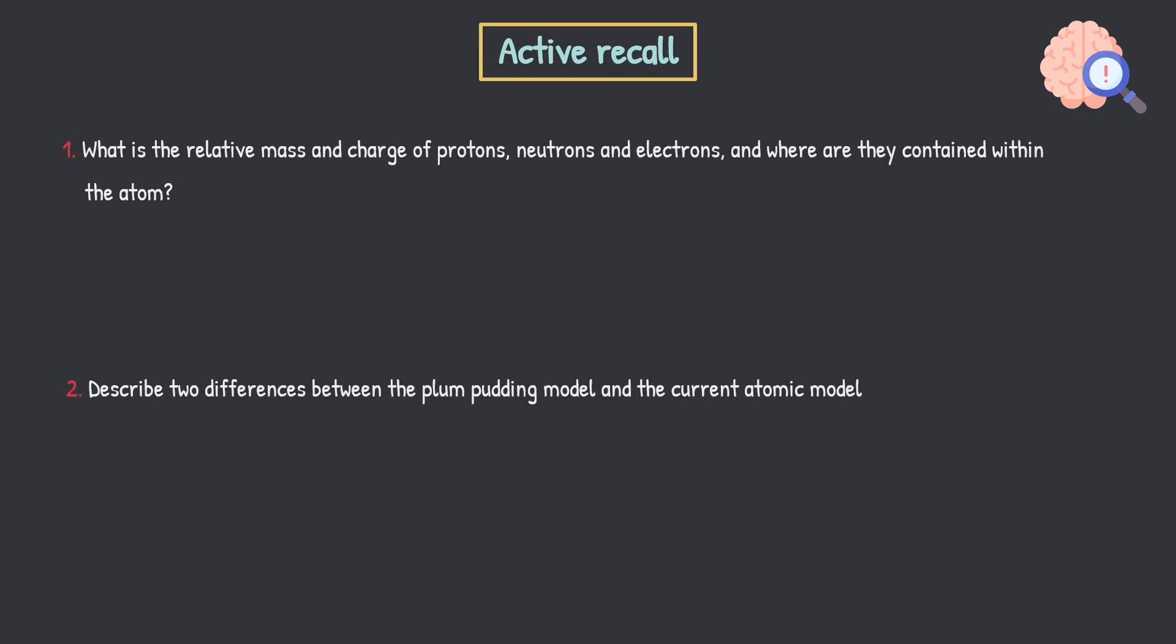So that's it. That's fundamental particles done. Subatomic particles done. Let's do a quick bout of active recall. I strongly advise you guys just quickly do this. I know it's a super easy video, but just attempt these questions. Jot some words down on a scrap piece of paper. See if you can remember what you just learned. The easy part is watching the video. The hard part is actually trying to remember the information. So first off, question 1. What is the relative mass and charge of protons, neutrons, and electrons? And where are they contained within the atom? So give this a go. Pause the video. Try it yourself. Next one.